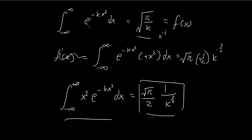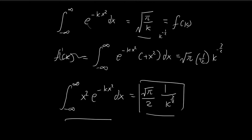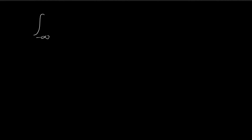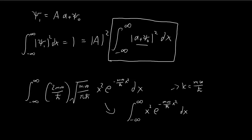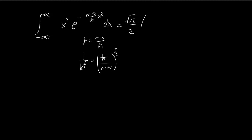We apply this result where k = mω/ℏ. The integral of x²·e^(−mω/ℏ · x²)dx equals (√π/2) · (1/(mω/ℏ)^(3/2)), which equals (√π/2) · (ℏ/mω)^(3/2). So the integral equals (√π/2) · (ℏ/mω)^(3/2). We now multiply the constants from our full integral expression by this result.